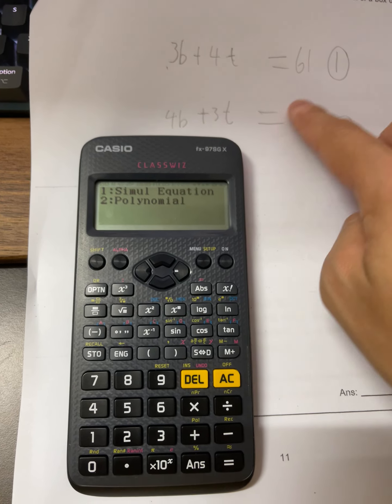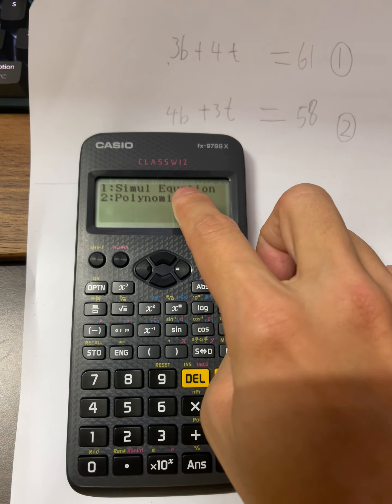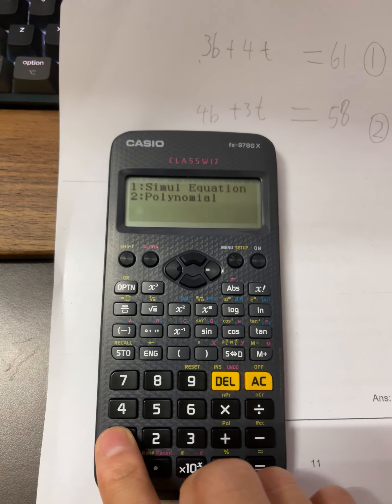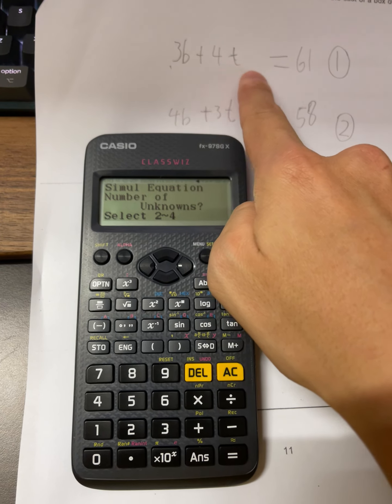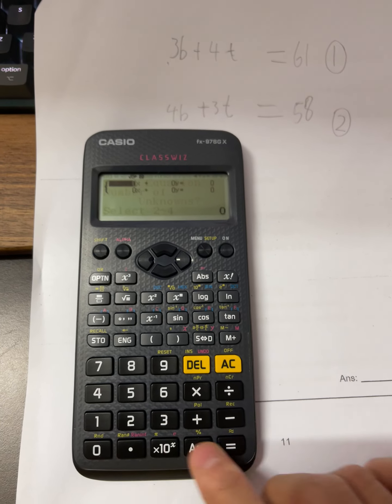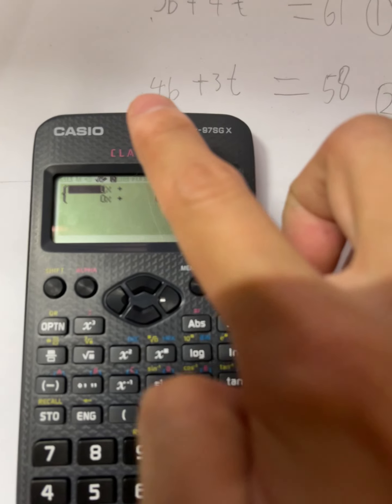This kind of question is called simultaneous equation. Okay, so you press one. They ask how many unknowns do you have. So you have b and t, so two unknowns.